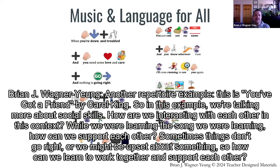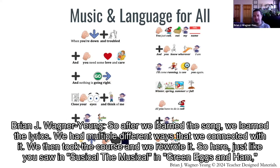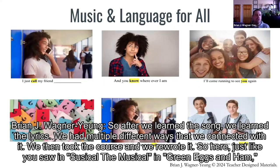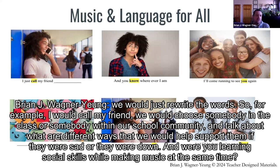Another repertoire example is 'You've Got a Friend' by Carole King. Here we're talking more about social skills — how are we interacting with each other? While learning the song and lyrics, we were learning how we can support each other, because sometimes things don't go right or we might be upset about something. After we learned the song, we took the chorus and rewrote it — just like in the Seussical example. We would choose somebody in the class or school community and talk about what different ways we would support them if they were sad or down. We were learning social skills while making music at the same time.